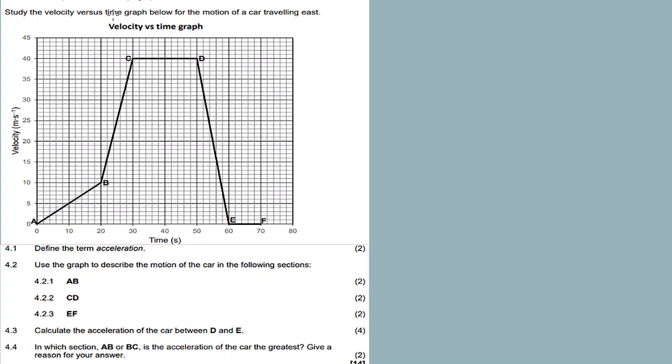Now, on this graph, the velocity-time graph, on the y-axis is velocity, on the x-axis is time. So you need to understand something about a velocity-time graph. When you look at the area under the graph, when you calculate the area under the graph, the area of any velocity-time graph gives you the displacement.